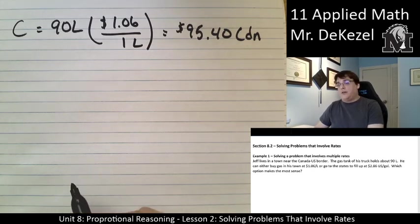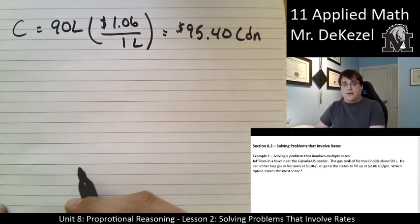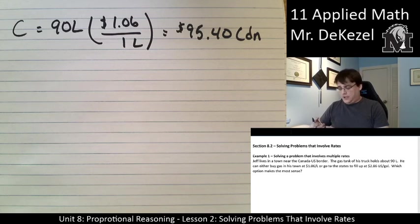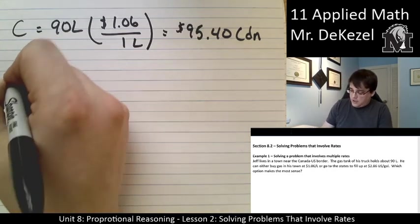So, in the Canadian town. The Canadian town is equal to... He needs 90 litres, and the price is $1.06 per one litre. So, I can find out how many dollars that would cost. It would cost him $95.40 Canadian. So, we want to find out if the price of gas in the U.S. involving not only the amount of gas that you get, but also the exchange rate, wants to make sure that it is the same.